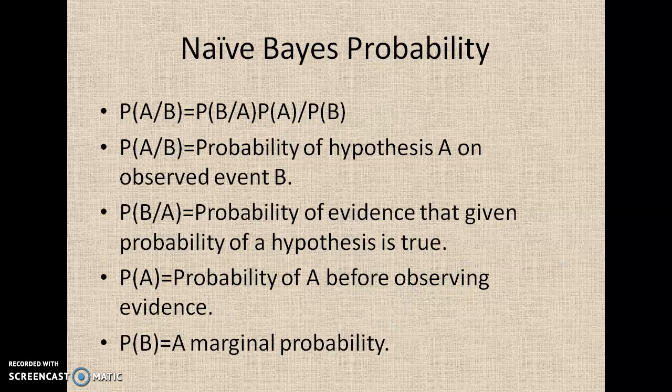What is the calculation formula for the Naive Bayes probability? Probability of A given B equals probability of B given A, multiplied by probability of A, divided by probability of B. Here, probability of A given B is the hypothesis A on evidence B. Probability of B given A is the evidence at which the hypothesis is true. Probability of A is the prior probability before observing the evidence. Probability of B is the marginal probability, or simply the evidence.